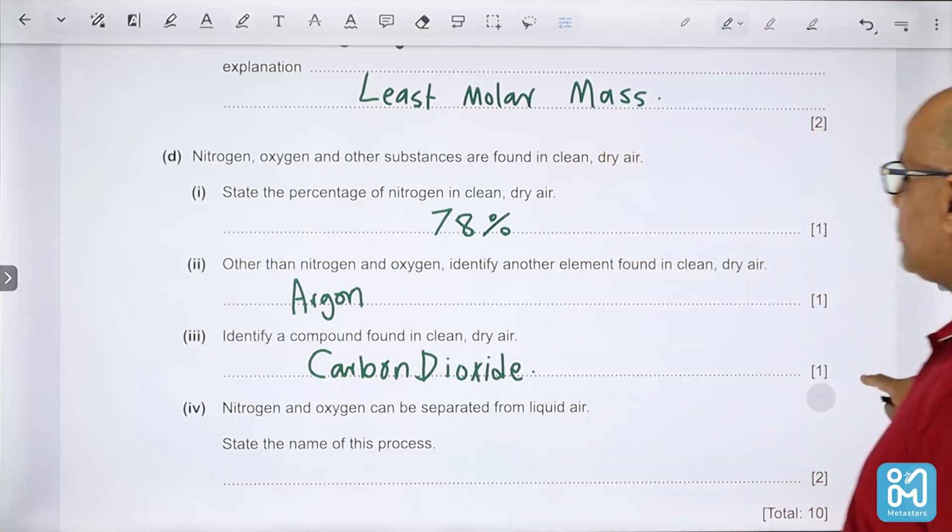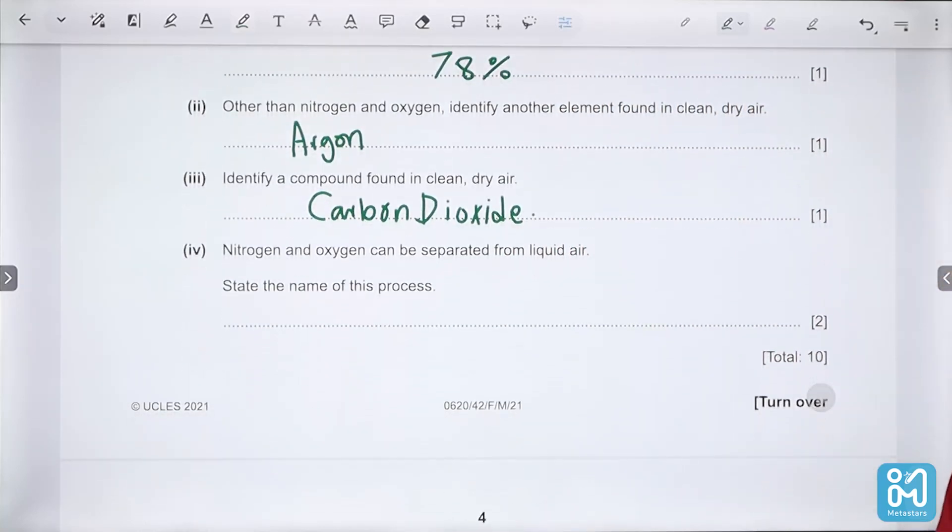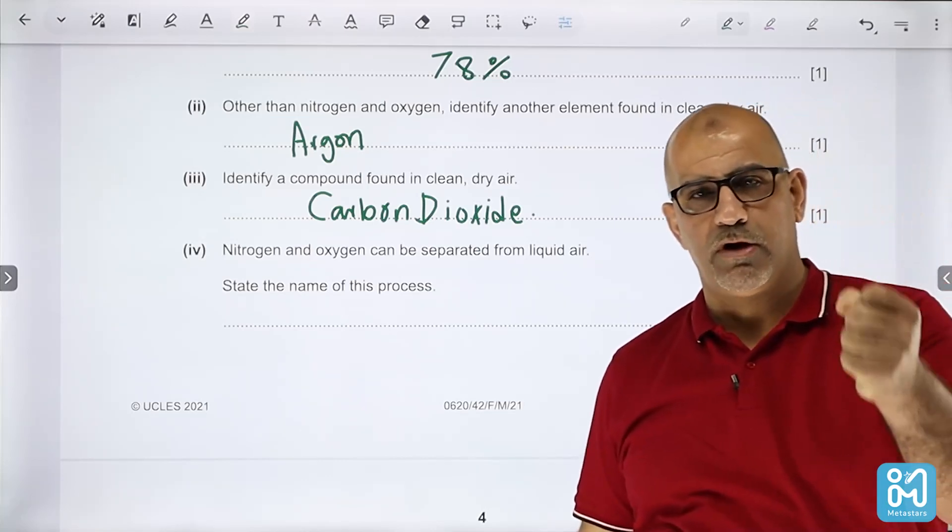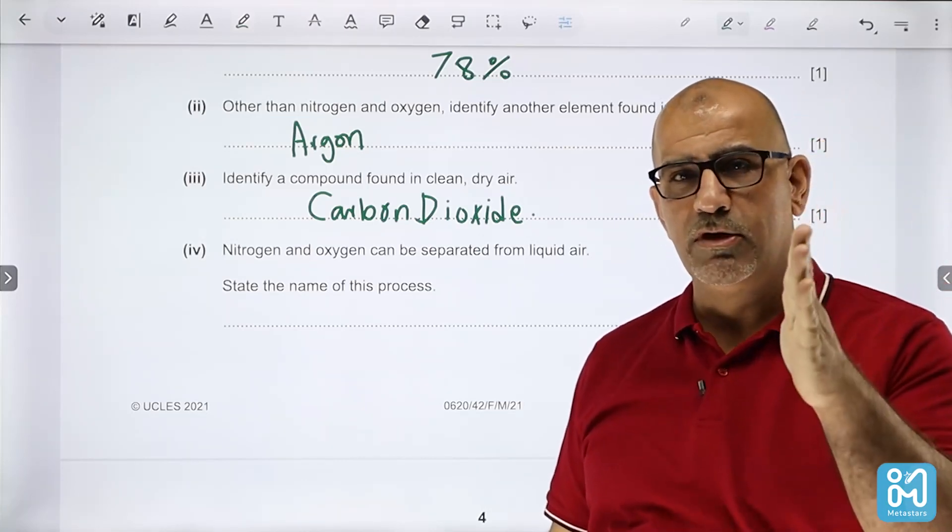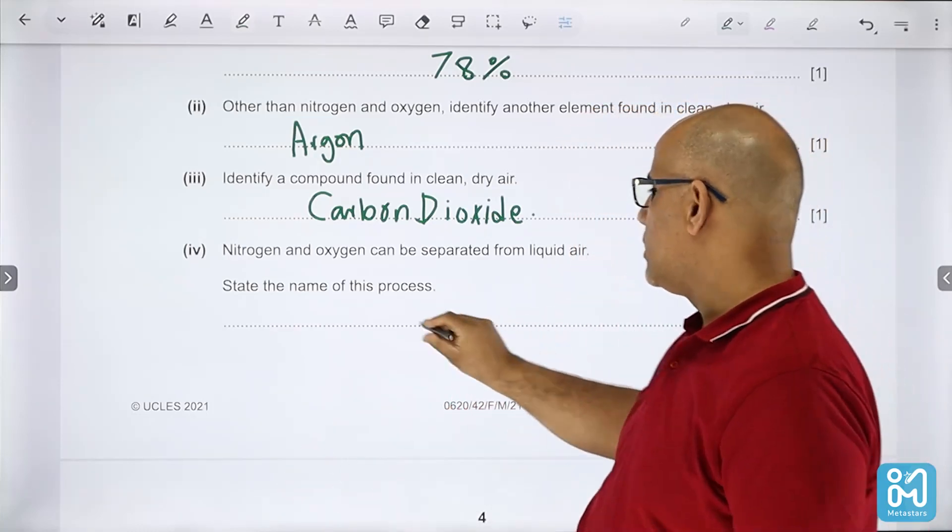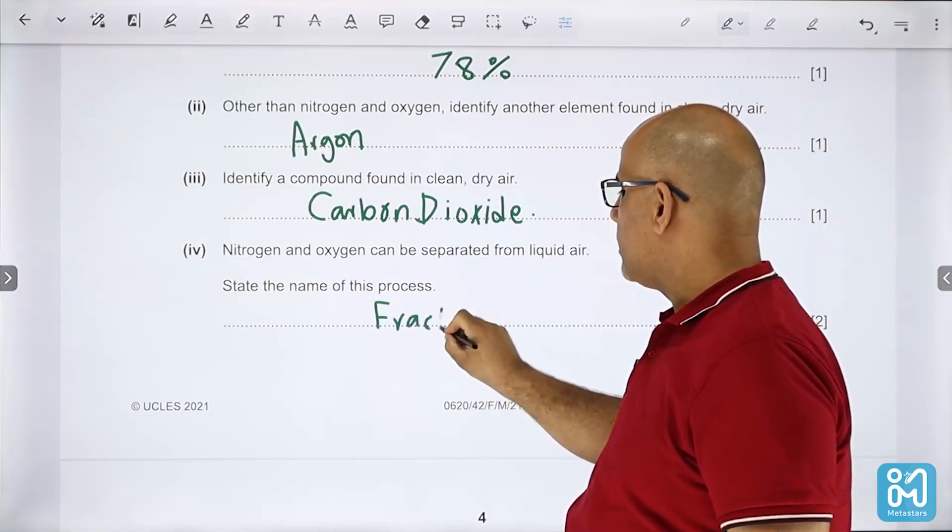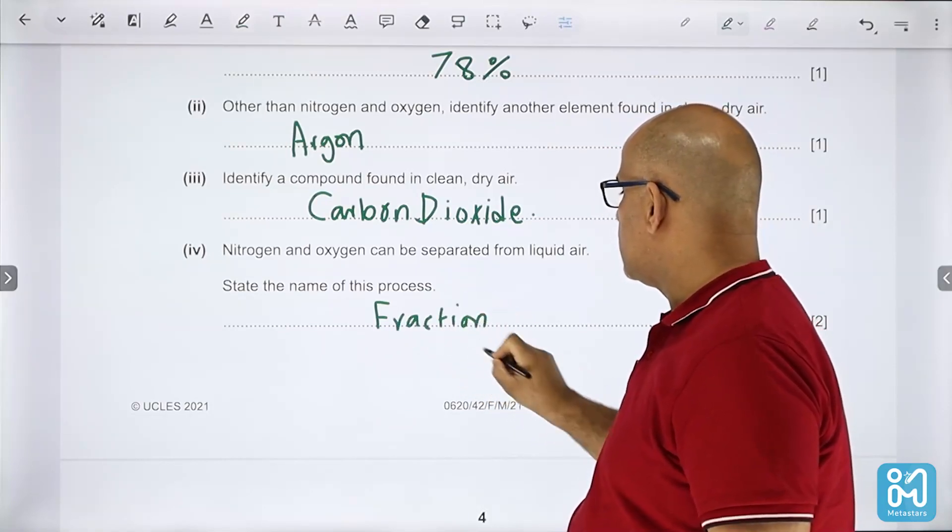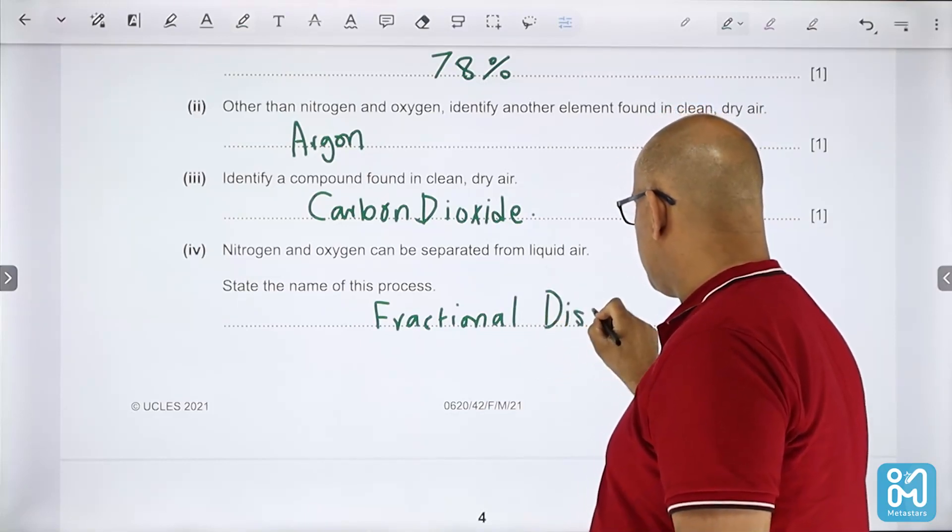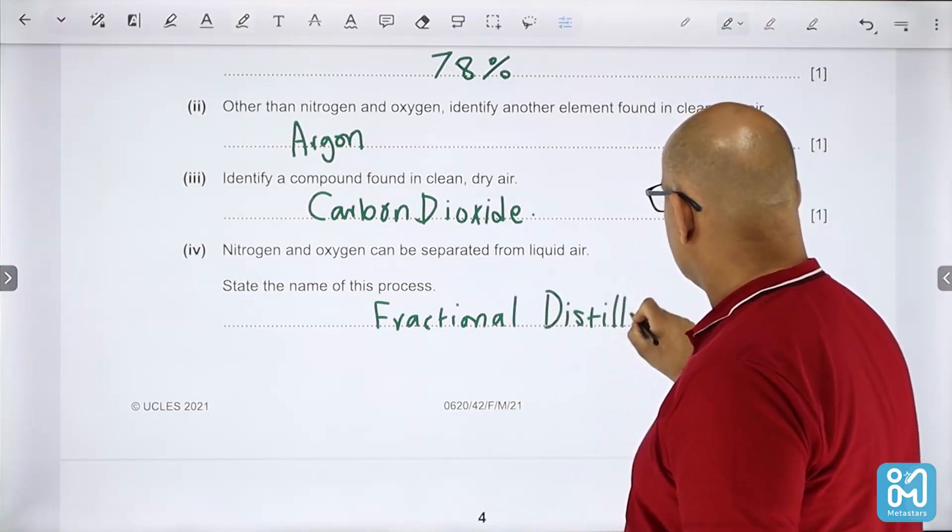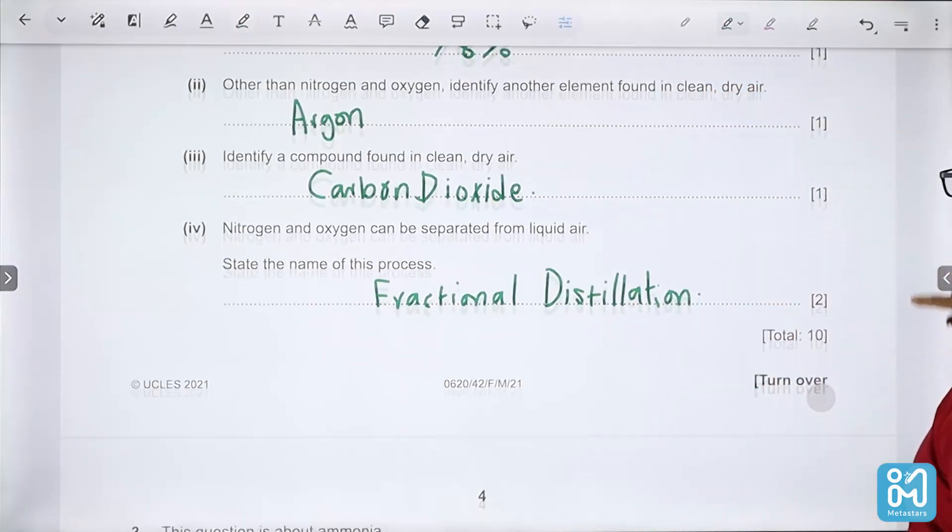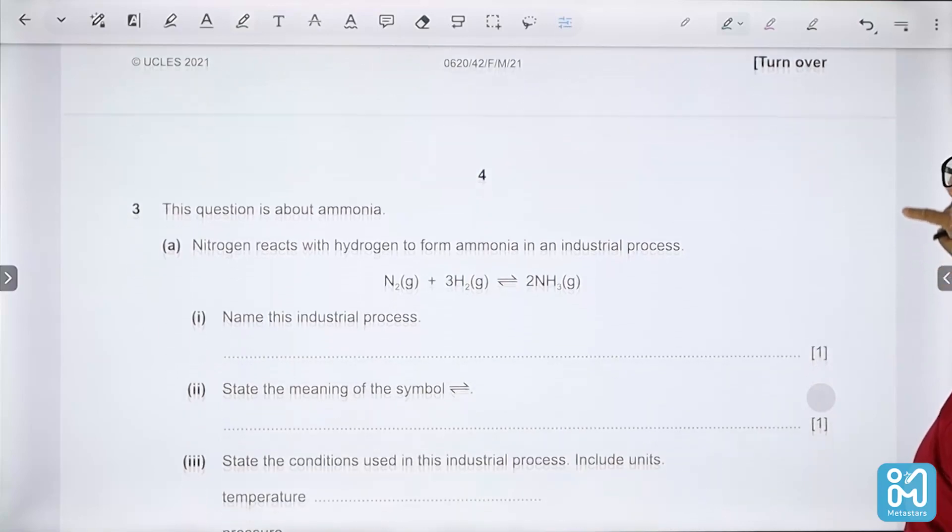Nitrogen and oxygen can be separated from liquid air. State the name of this process. When you have a liquid with different boiling point substances, you shall use fractional distillation which depends on the difference in boiling points.